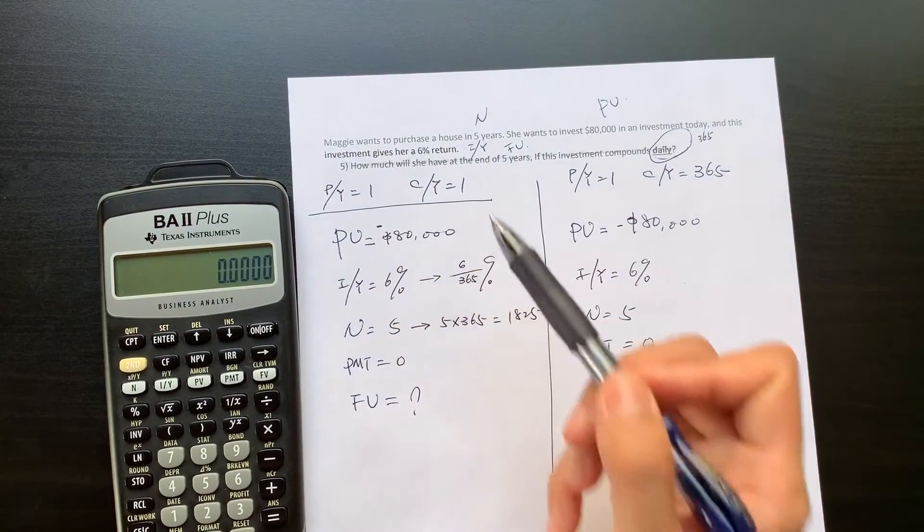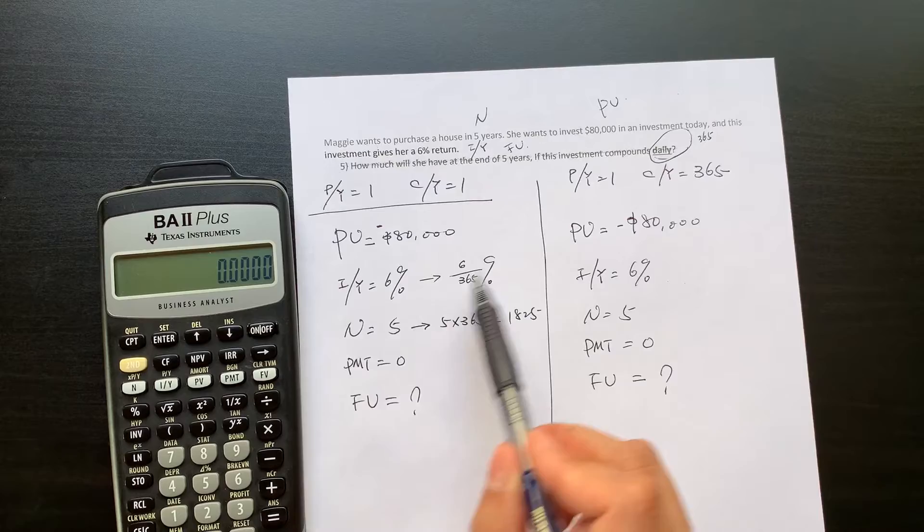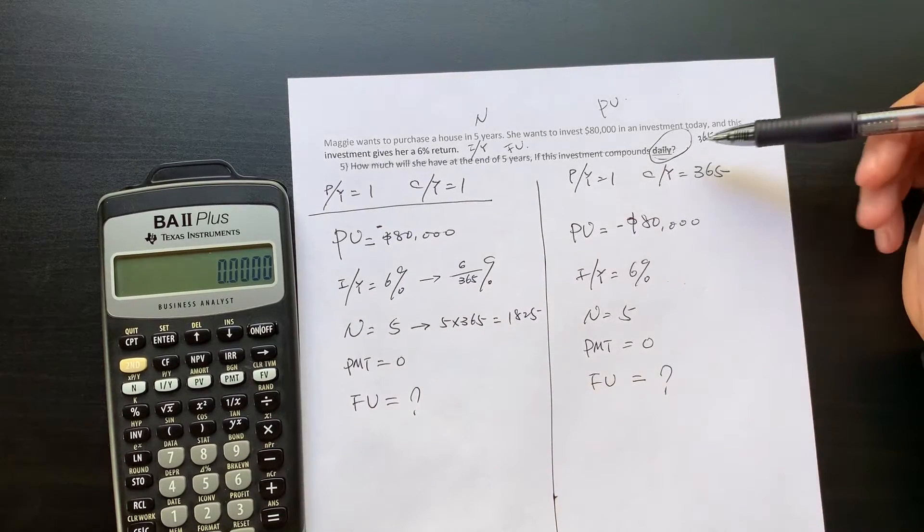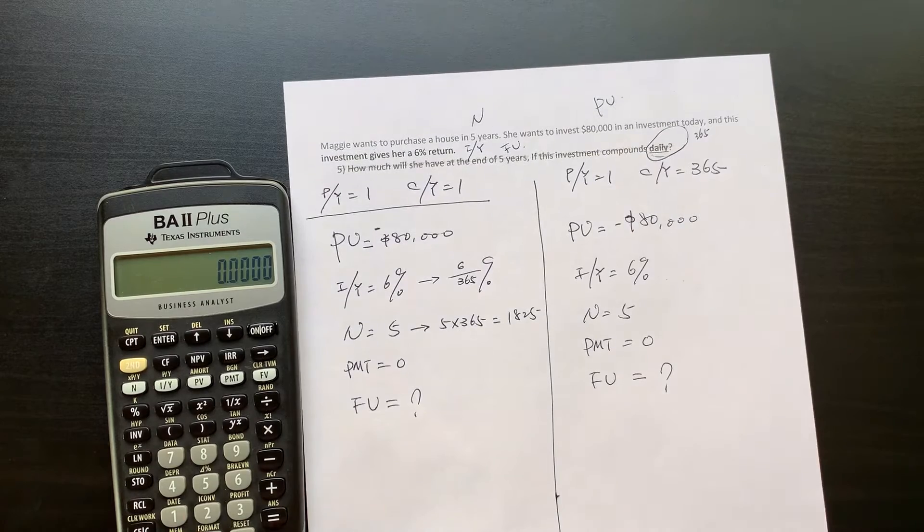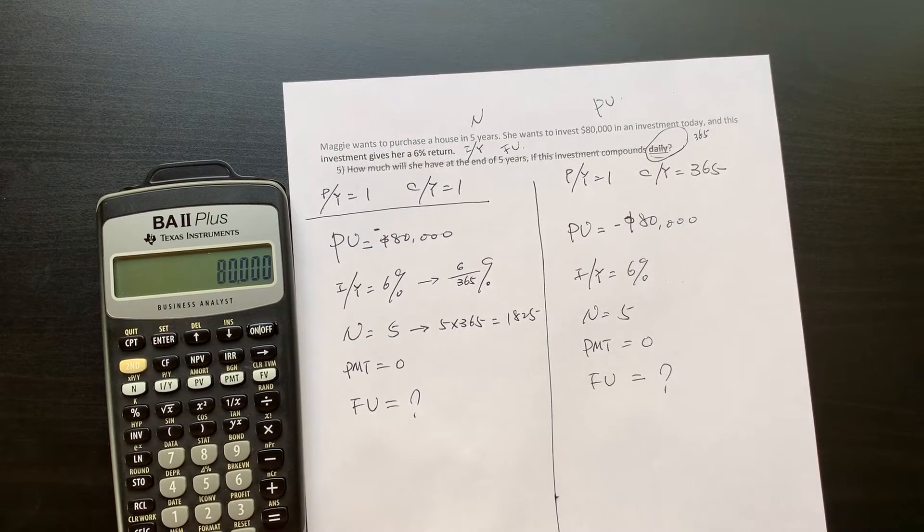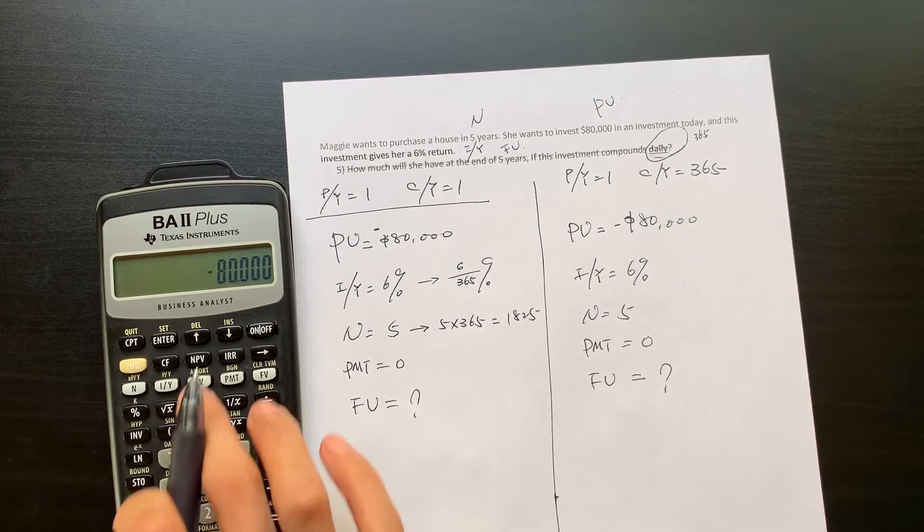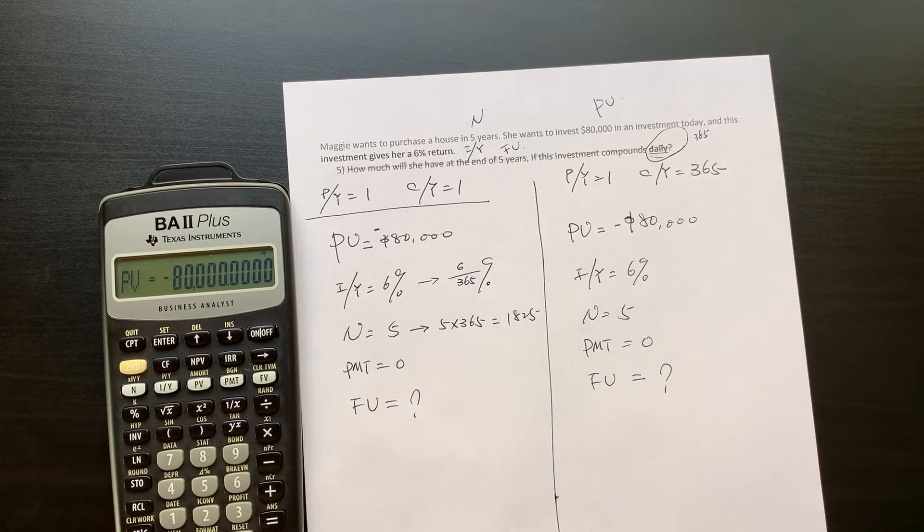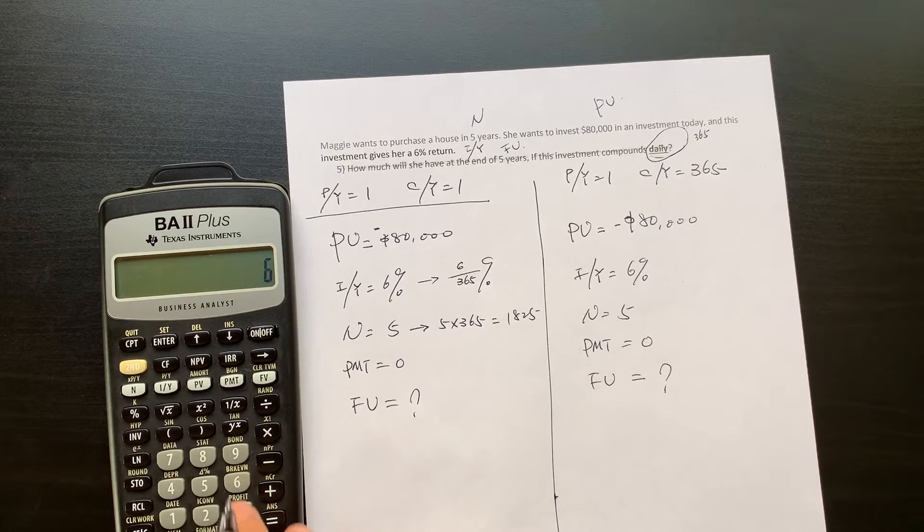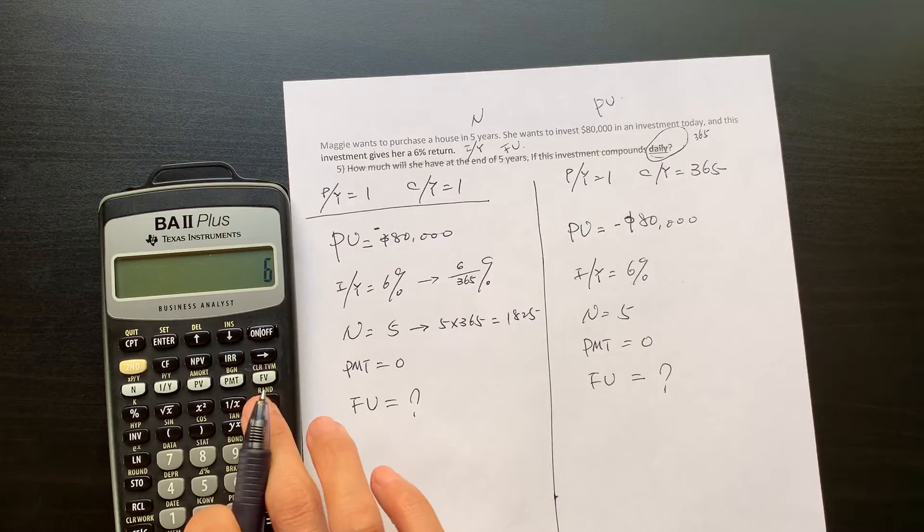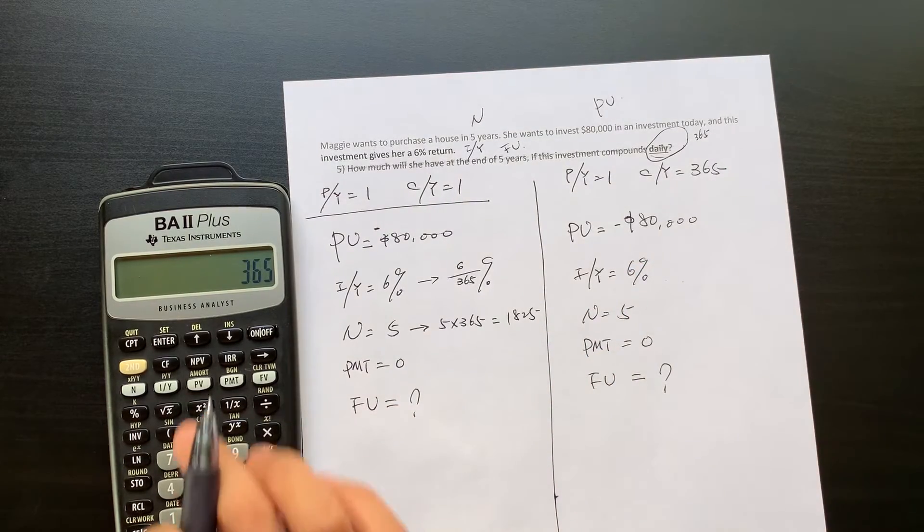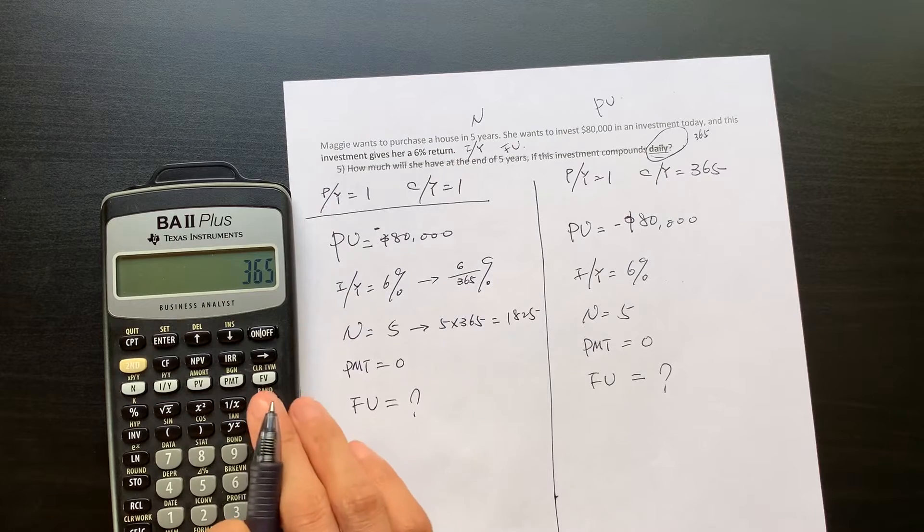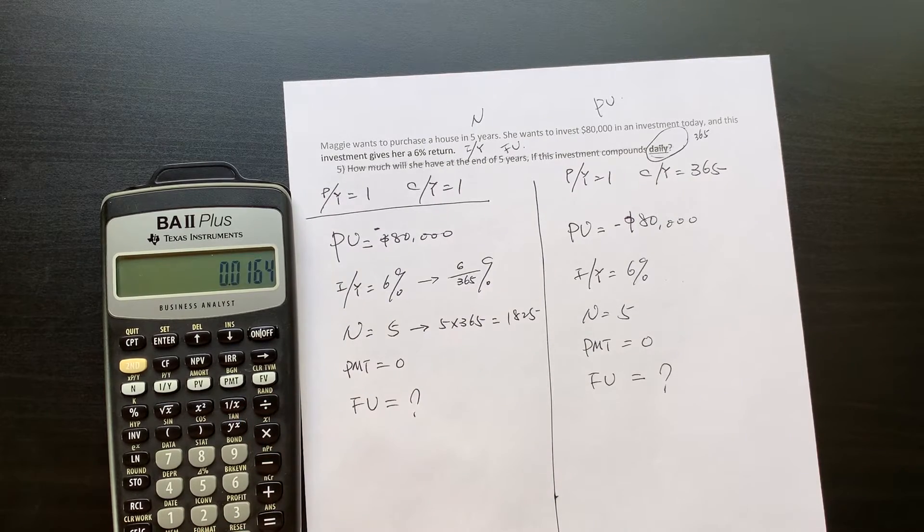Because your PY, CY equal to 1, we have to adjust the number to reflect the fact this is compounding daily. So $80,000 is your investment for the present value. And your interest rate is 6% annually, but you are compounding at 365.